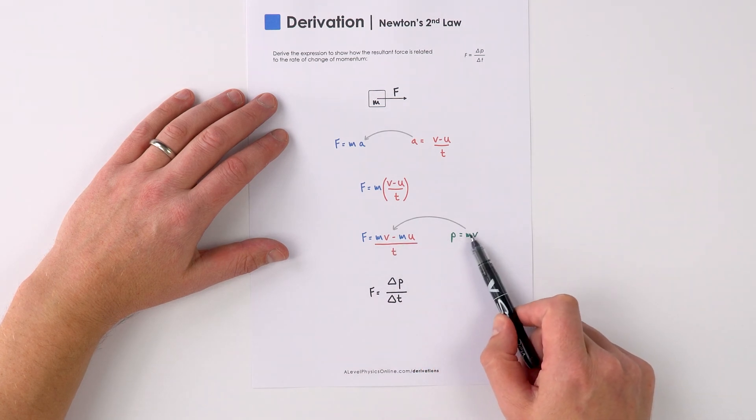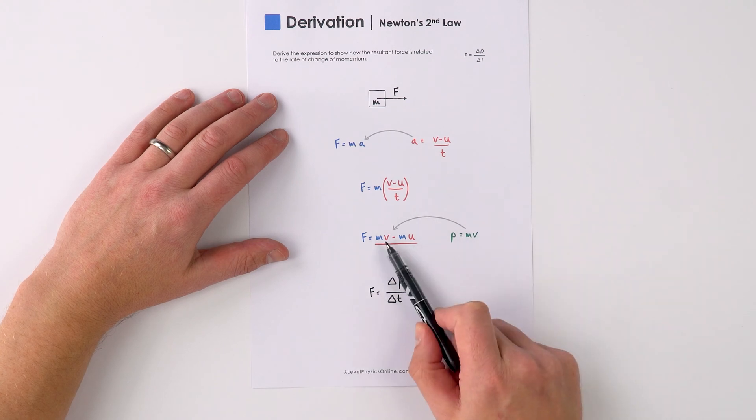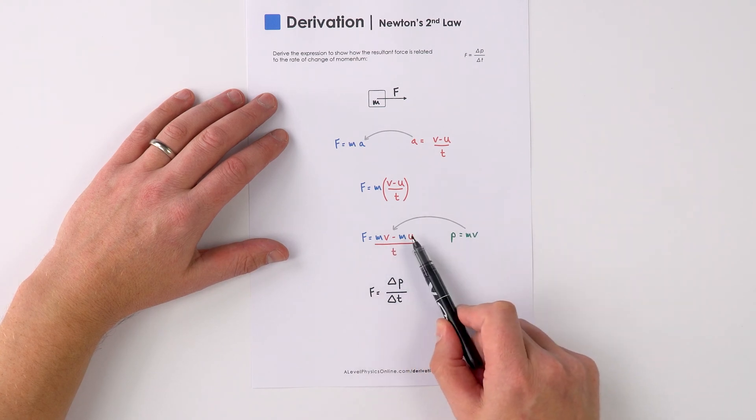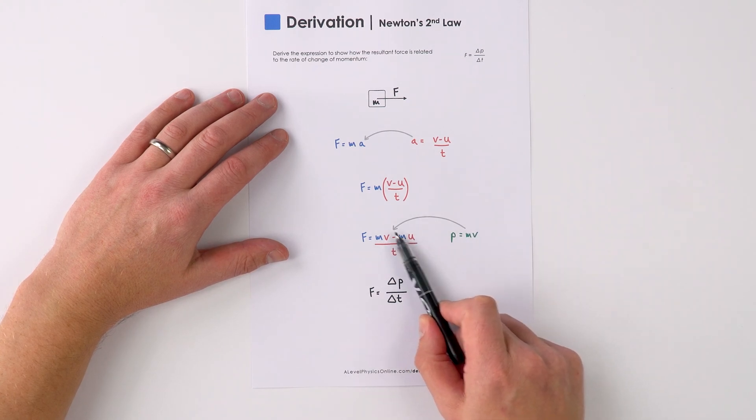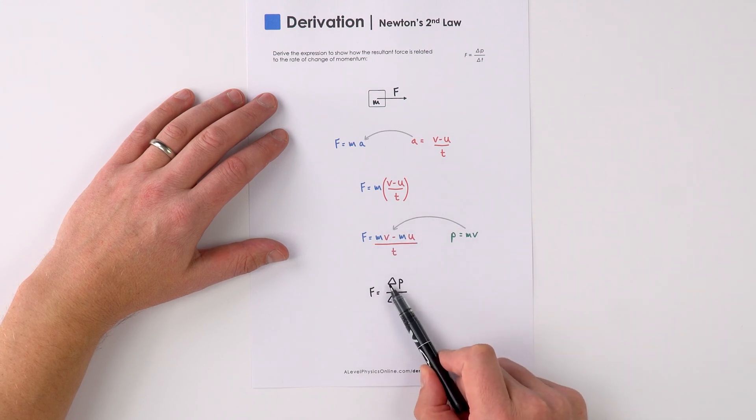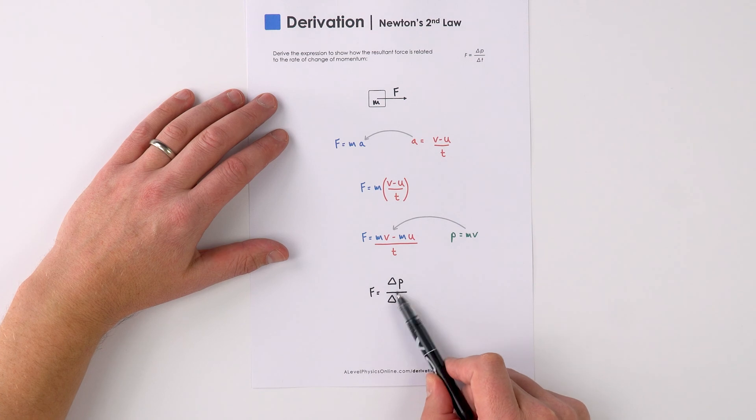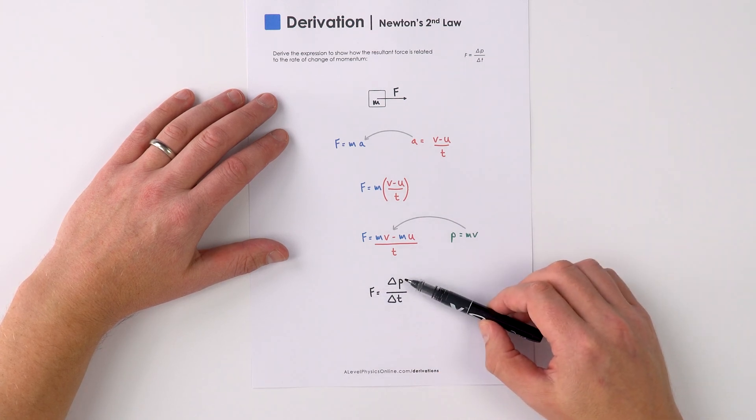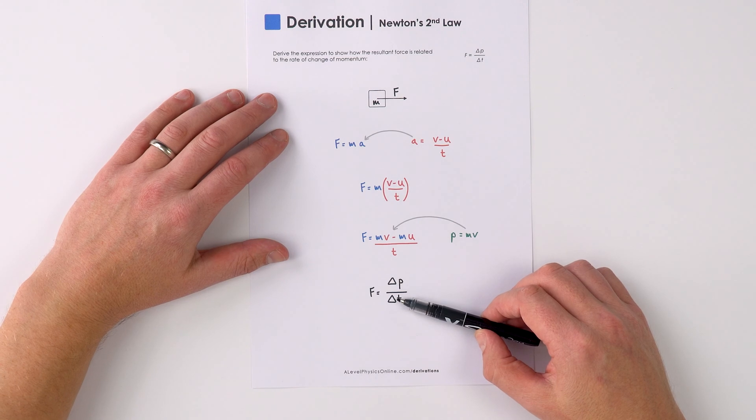And momentum is equal to the mass times velocity. So this is our final momentum, and that's our initial momentum, and therefore we can write this as our change in momentum over the time it takes for that change in momentum to occur. And that's why we can say that f is equal to delta p over delta t.